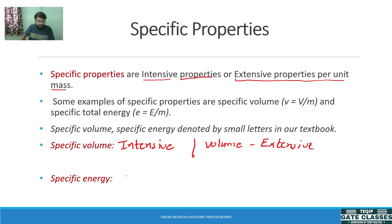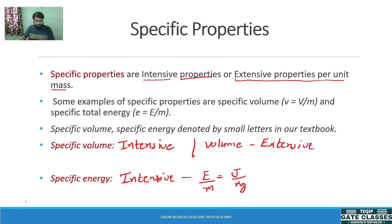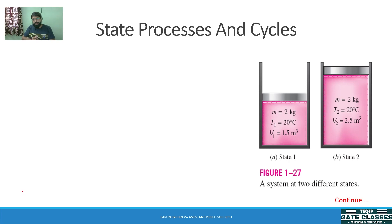Similarly, specific energy is energy per unit mass — this is also an intensive property. Its unit is joules per kilogram. So we have understood: thermodynamics involves a system, and there is surrounding. The system is what we study; everything outside is the surrounding; and the boundary separates them.